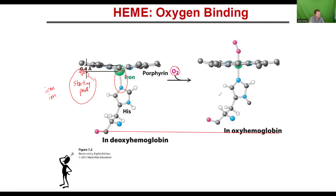When oxygen binds, what happens to the polypeptide backbone compared to that straight line? Does it stay in the same place? If it doesn't, what happens? It moves towards the more electronegative elements. Essentially, oxygen binds and pulls that histidine ring and pulls that polypeptide backbone — this is essentially what leads to a conformational change of the protein.